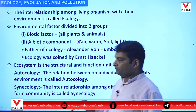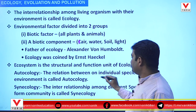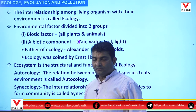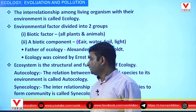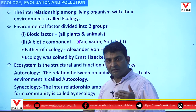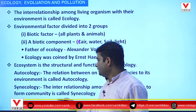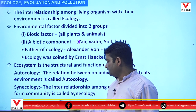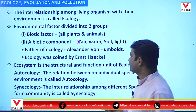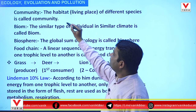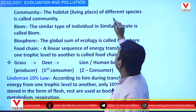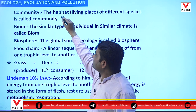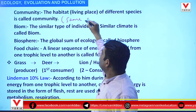Autecology means the relationship between an individual species and its environment — here only one species is considered. Synecology is another branch of ecology; it refers to the interrelationship among different species to form a community. Community means the habitat — that is, the living place of different species — and always remember it refers to species in the same area, not different areas.